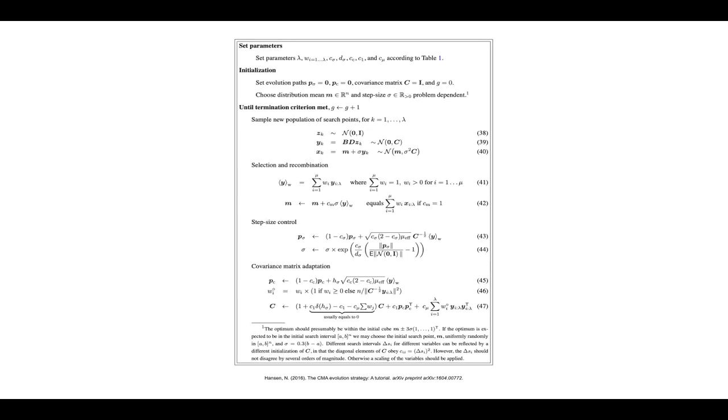Hello and welcome to part 2 of the covariance matrix adaptation evolution strategy. Previously in part 1 we looked at a simple evolution strategy that was based on iteratively updating the mean of a normal distribution. And we also looked at a simple technique for adapting the covariance matrix that was described in the Autolo tutorial.